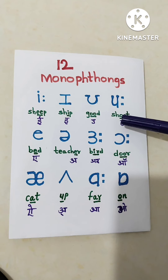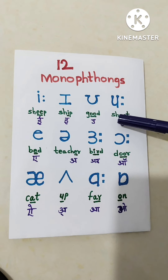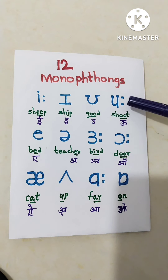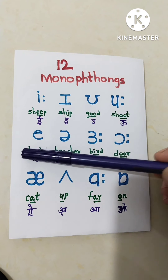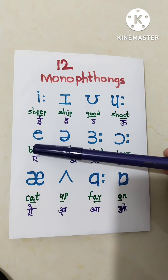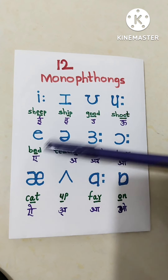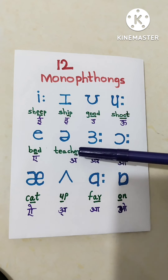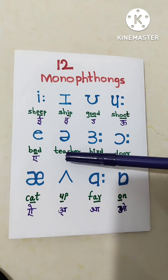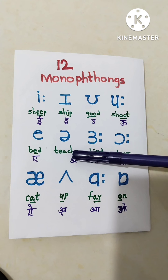Good. This is shoot — the long U sound. This is the short E sound. Bed. Here in this word, teacher, we say teacher.